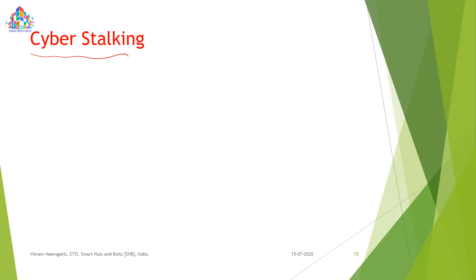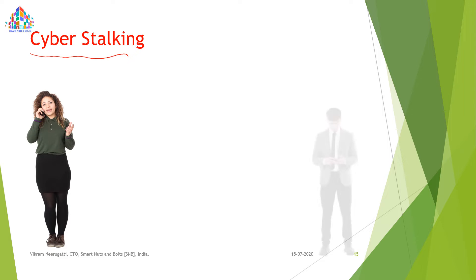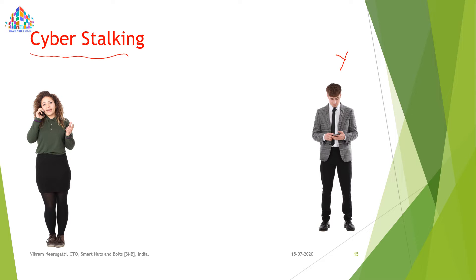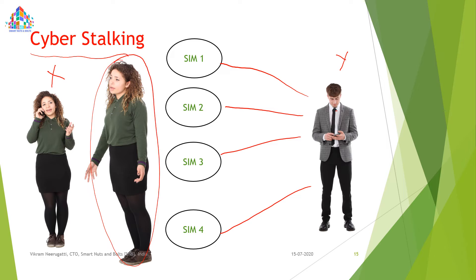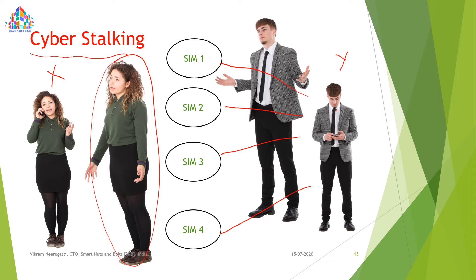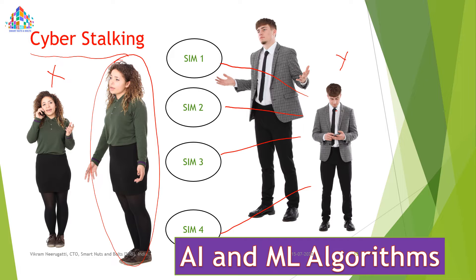Next is cyberstalking detection. A girl may be getting calls from the same harassing person via SIM1, SIM2, SIM3, SIM4 — different mobile numbers. This application can track that person: even though he calls from different numbers, with the help of voice recognition we can identify him and confirm he is the same person calling the same girl from different mobile numbers. This is done with AI and machine learning speech detection methods.